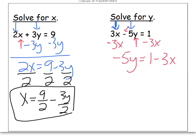Now to get rid of the times the negative 5, I'm going to divide by negative 5 on every piece. That leaves me with y equals 1 over negative 5 minus, be careful, a 3x over negative 5.